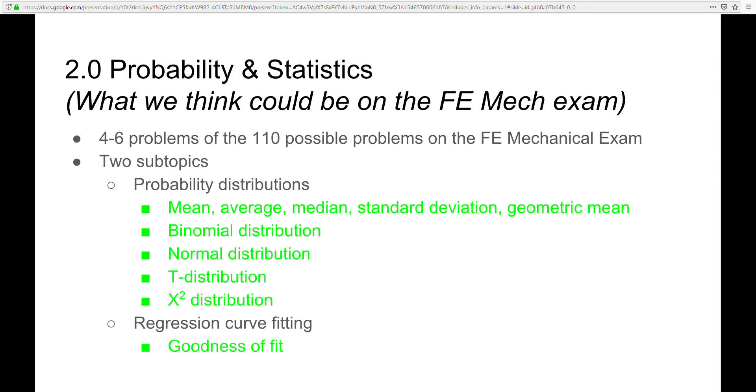Also, since there are only four to six possible problems, the exam must focus even more on just the most important aspects of the topic, such that the exam can be an accurate test of an engineer's understanding of the topic. So this criteria allowed us to whittle down the very large probability and distributions topic into the following items in green.